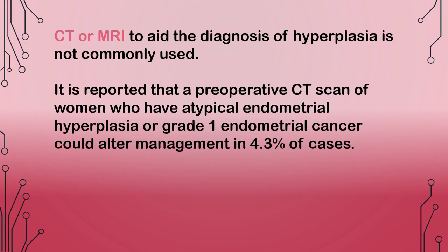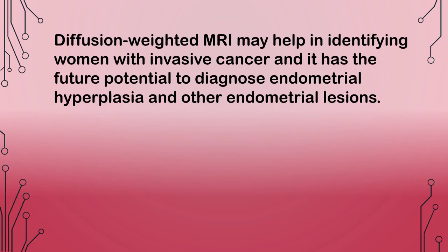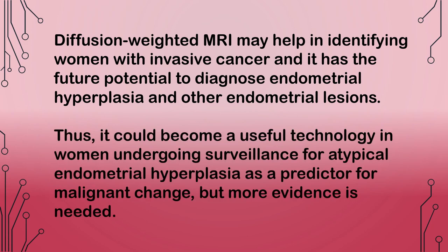CT or MRI to aid the diagnosis of hyperplasia is not commonly used. A preoperative CT scan of women with atypical endometrial hyperplasia or grade 1 endometrial cancer could alter management in 4.3% of cases, but it is expensive and associated with radiation, so it should not be routinely recommended. Diffusion-weighted MRI may help in identifying women with invasive cancer and has future potential to diagnose endometrial hyperplasia, but more evidence is needed.